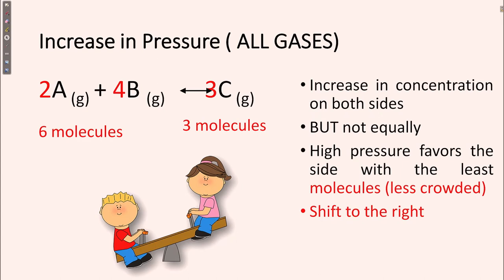So for increase in pressure in all gases, what will happen? There is an increase in concentration on both sides — both backward and forward directions — but not equally. High pressure favors the side with the least molecules, that means the less crowded side, which is a shift to the right direction. Always remember: high pressure favors the side where the least number of molecules is present.